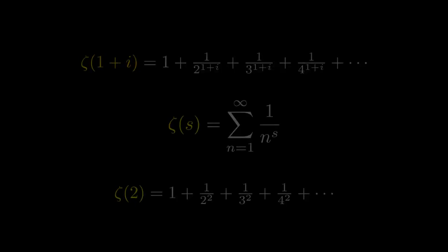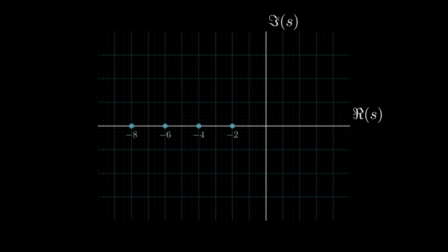Surprisingly enough, every negative even number yields zero for the zeta sum. Even more weird is that there exist a lot of zeta zeros when the real part of the argument is positive 0.5. These zeros are called non-trivial and are guaranteed to be greater than 0 and less than 1.